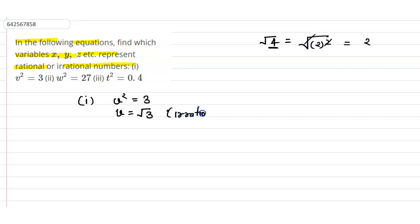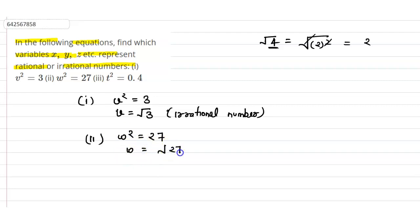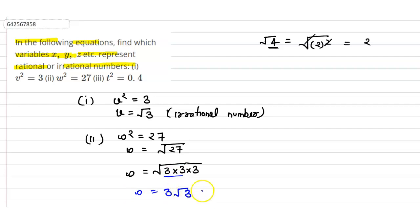The second part gives w² = 27. Taking the square root, w = √27. We can write 27 as 3 × 3 × 3, so √27 = √(3² × 3) = 3√3. Since the result still contains a square root, this number is irrational.